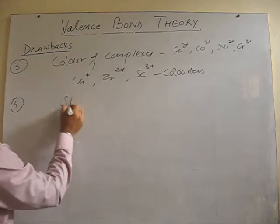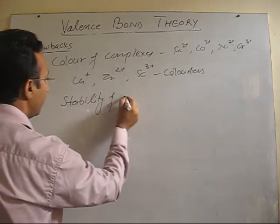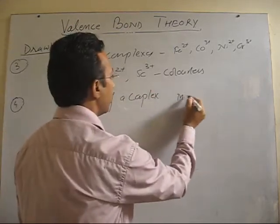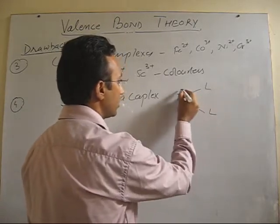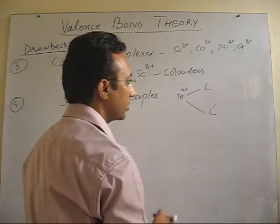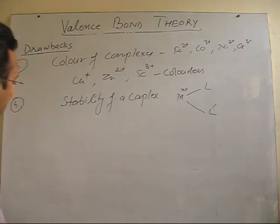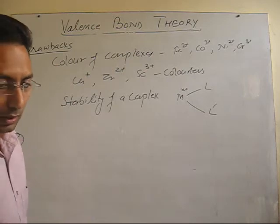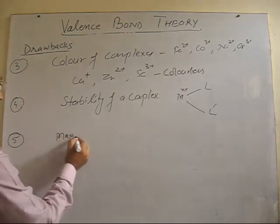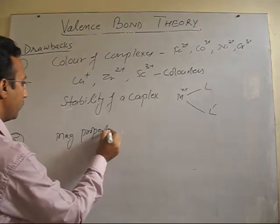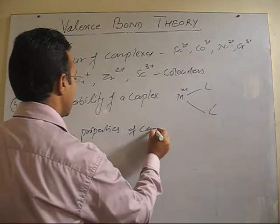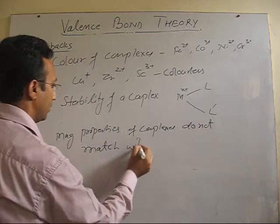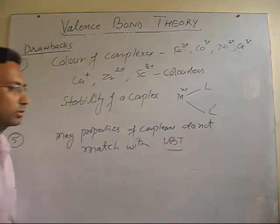Then, VBT could not explain stability of a complex. When, suppose the same metal, coordinate with a different ligand. Same metal in one same oxidation state, X positive, coordinating with L and L dash, have different stability in the aqua solution, which could not be explained. Then, next, we have that sometimes the magnetic properties as we have discussed, magnetic properties of complexes do not match with bonding predicted by valence bond theory.